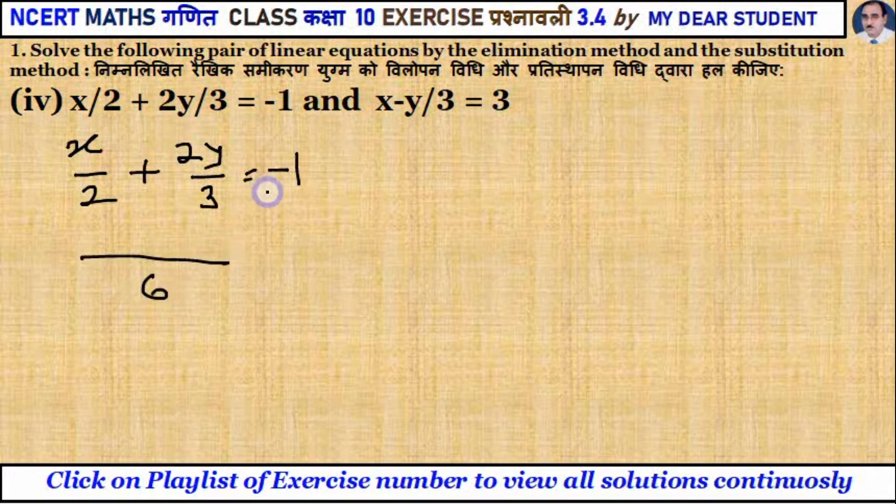6, 1... 3x... 2... 2y plus 4y equal to minus 1 minus 6, minus 6.